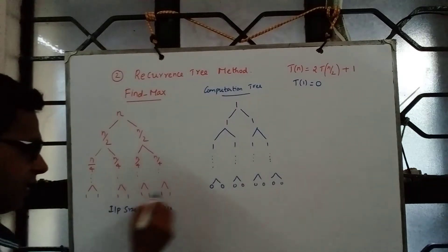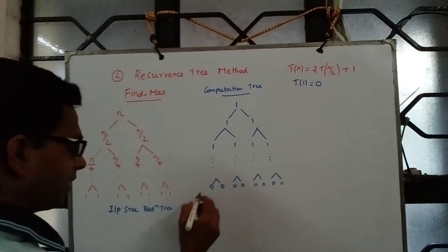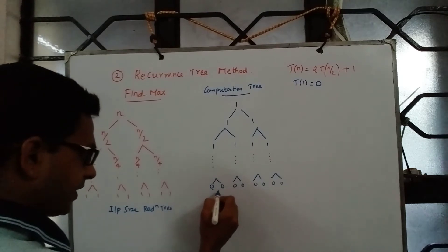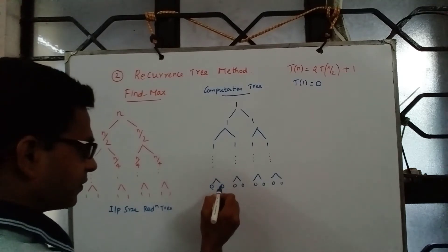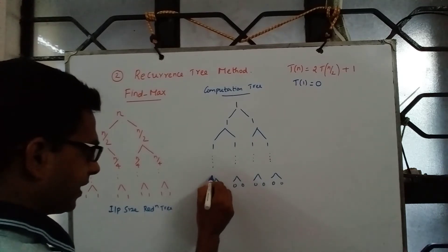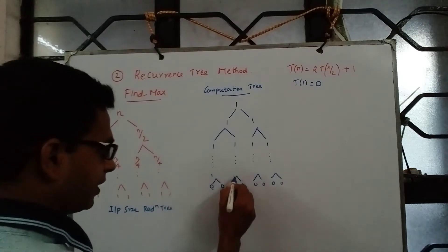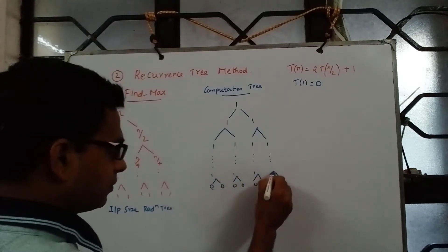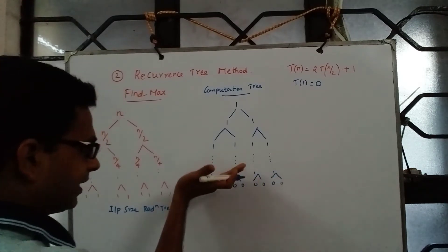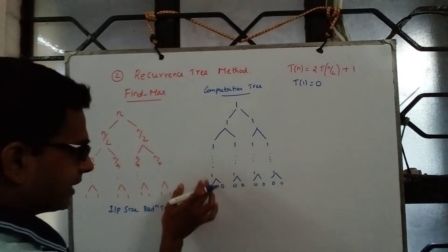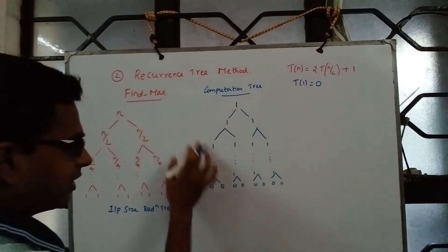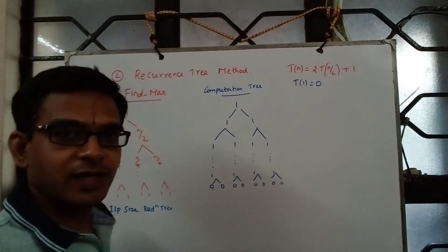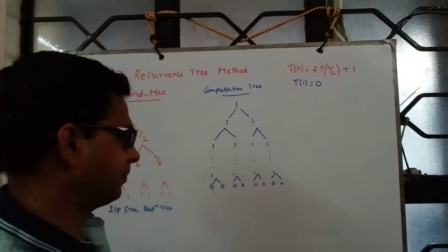When problem size is 1 we do not incur anything because the element itself is the maximum. We make one comparison to return max of two elements at the second-to-last level. So starting from the last-but-one level upward, at each node we incur 1 comparison.